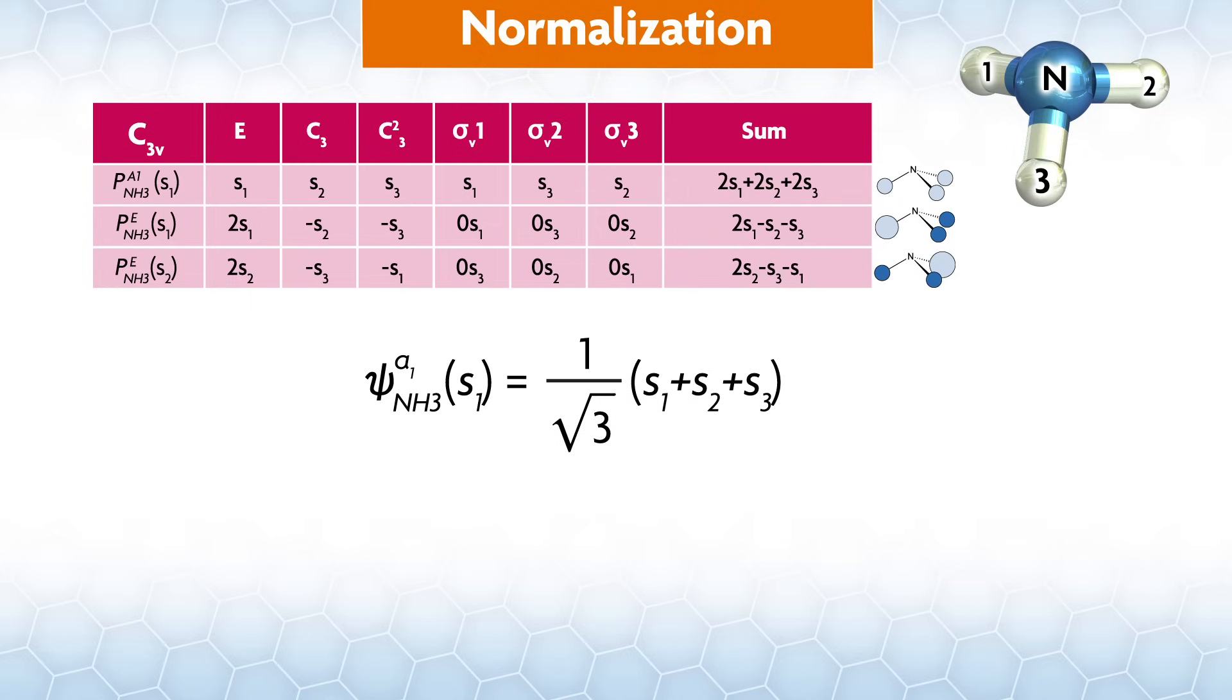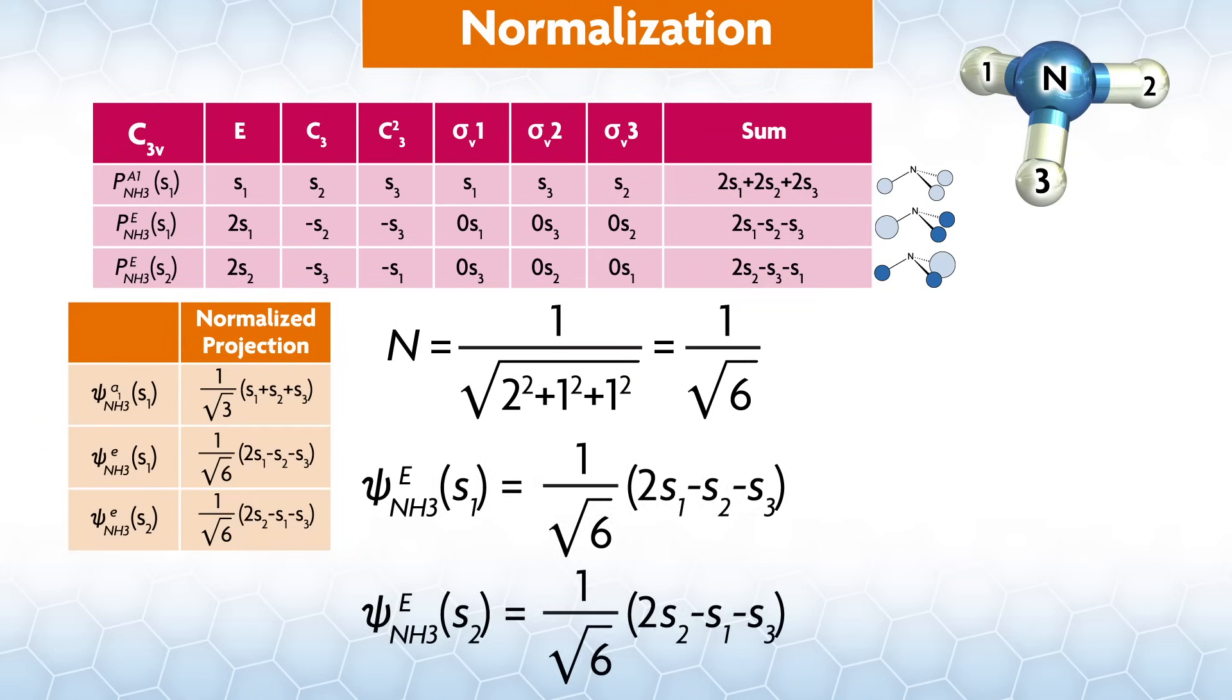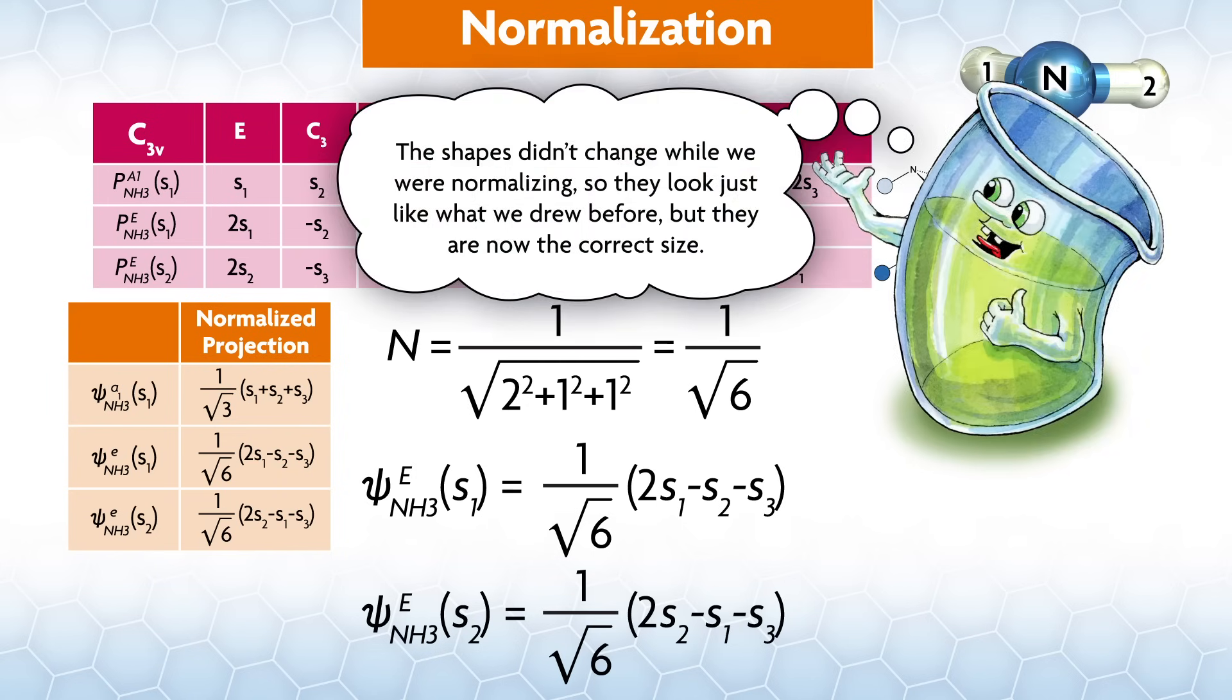Note, this is a general feature of normalization. If you have the same factor on every orbital like the two above, it will generally disappear, and the normalization factor will be for the lowest common factor on each orbital. Now we can normalize the projections we got by applying the e irreducible rep to s1 and s2 to get this. Again, the shapes didn't change while we were normalizing, so they looked just like what we drew before. But they are now the correct size.